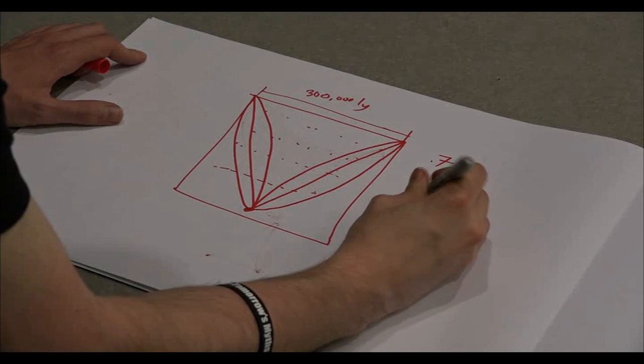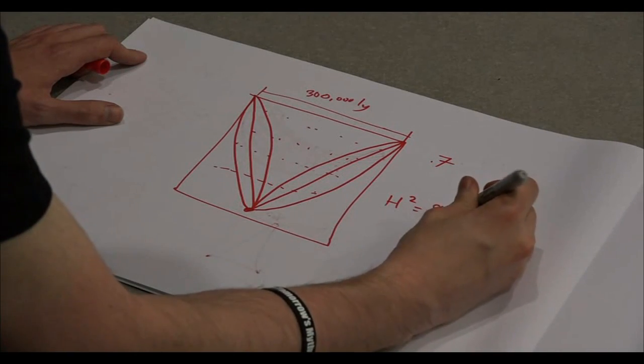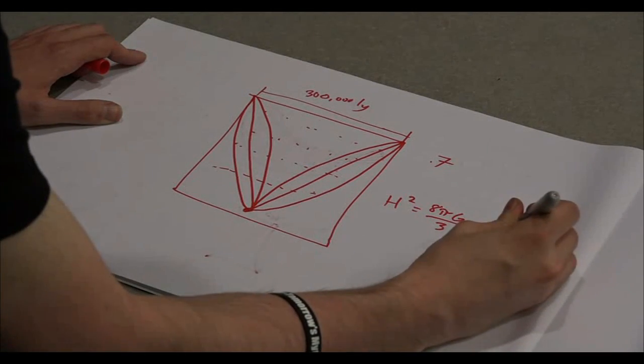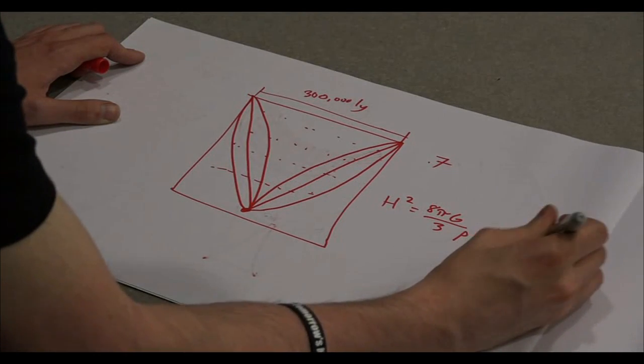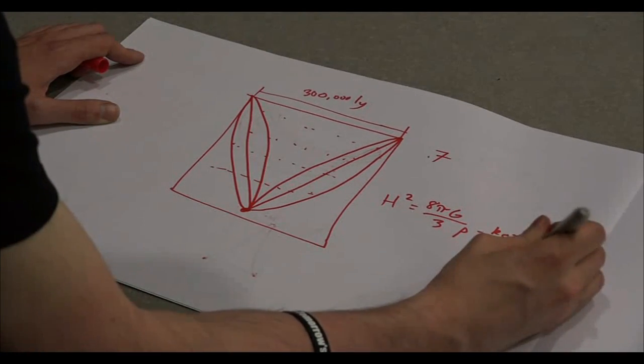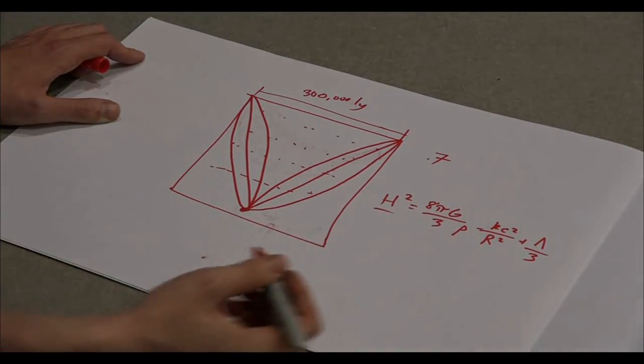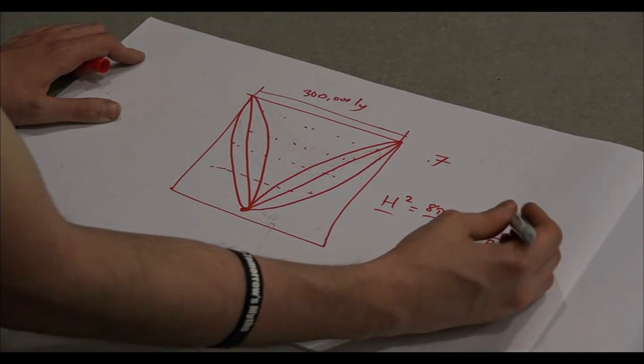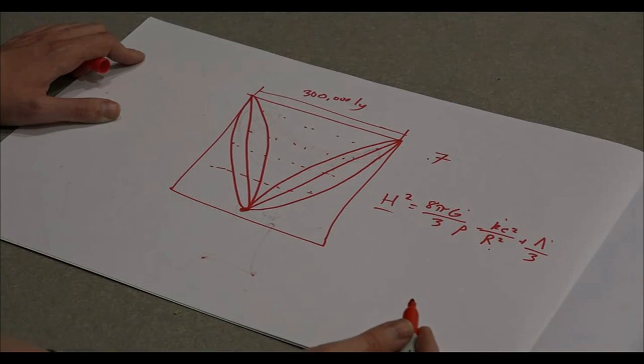There is an equation I'm going to write down here: H² = 8πG/3P - Kc²/R² + Λ/3. This H is Hubble's constant, this is the gravitational constant, this is the expansion rate, this is the radius of the universe, and this is the cosmological constant.